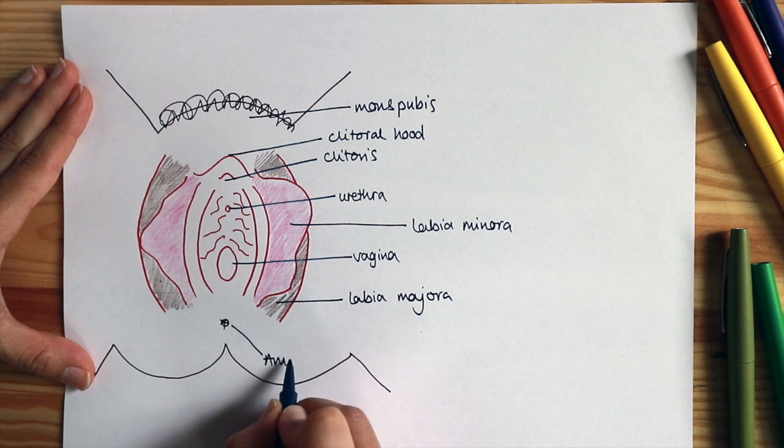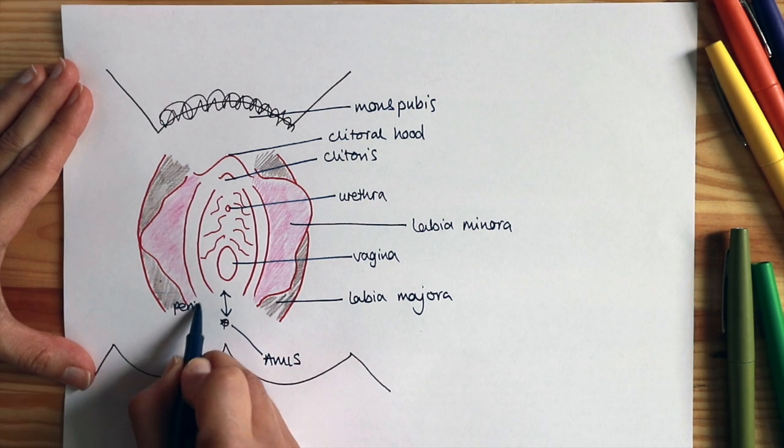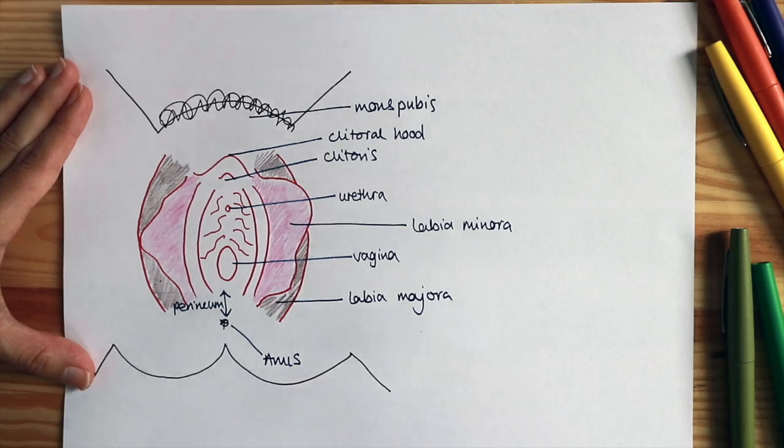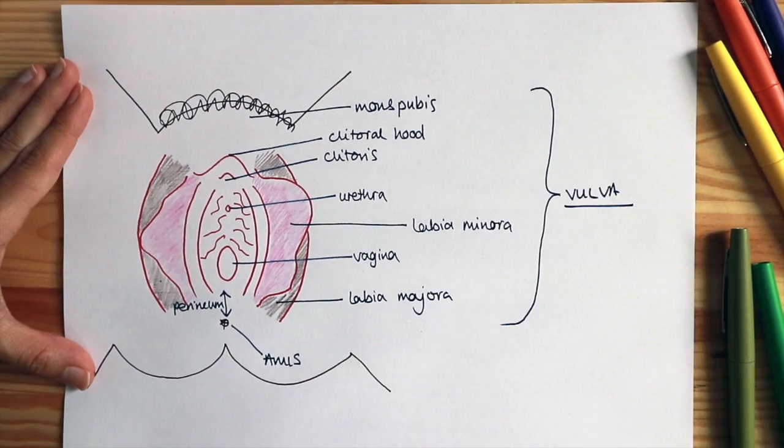Then we have the anus at the back and the area between the vagina and the anus is called the perineum. Now the whole area from the mons pubis right down to the anus is also called the vulva.